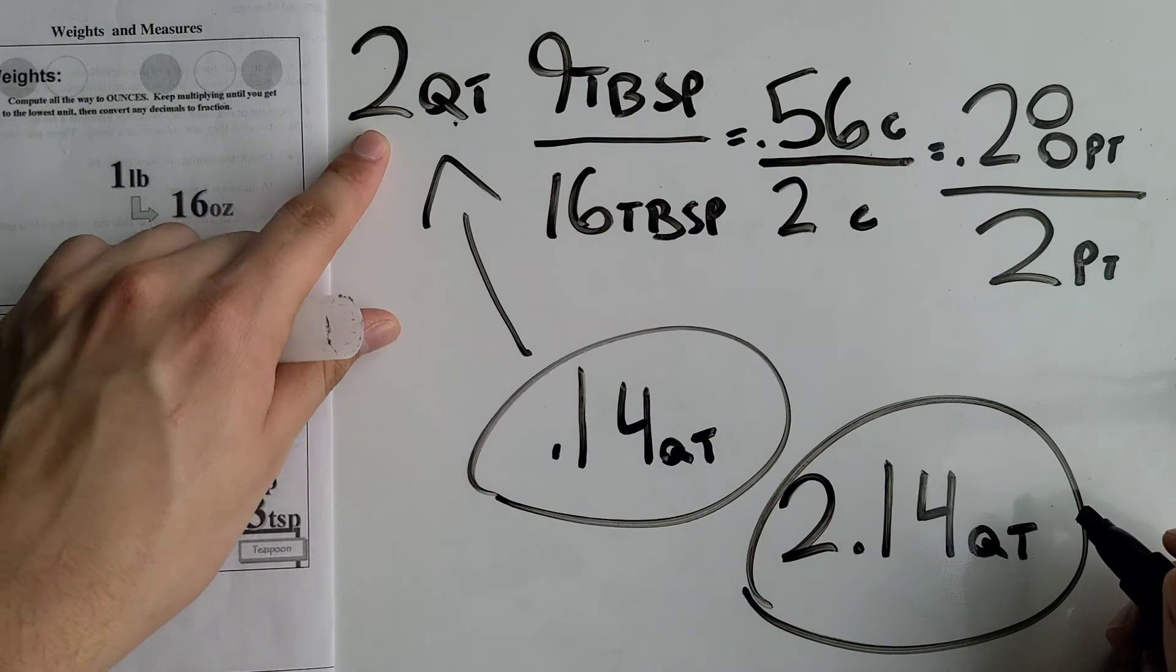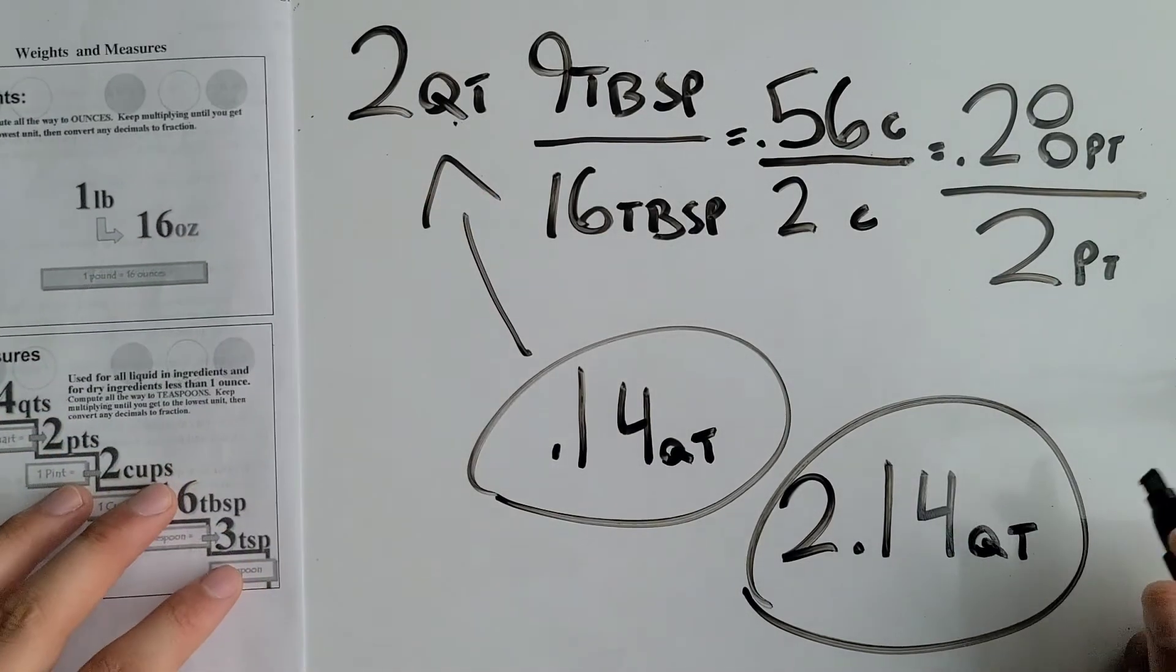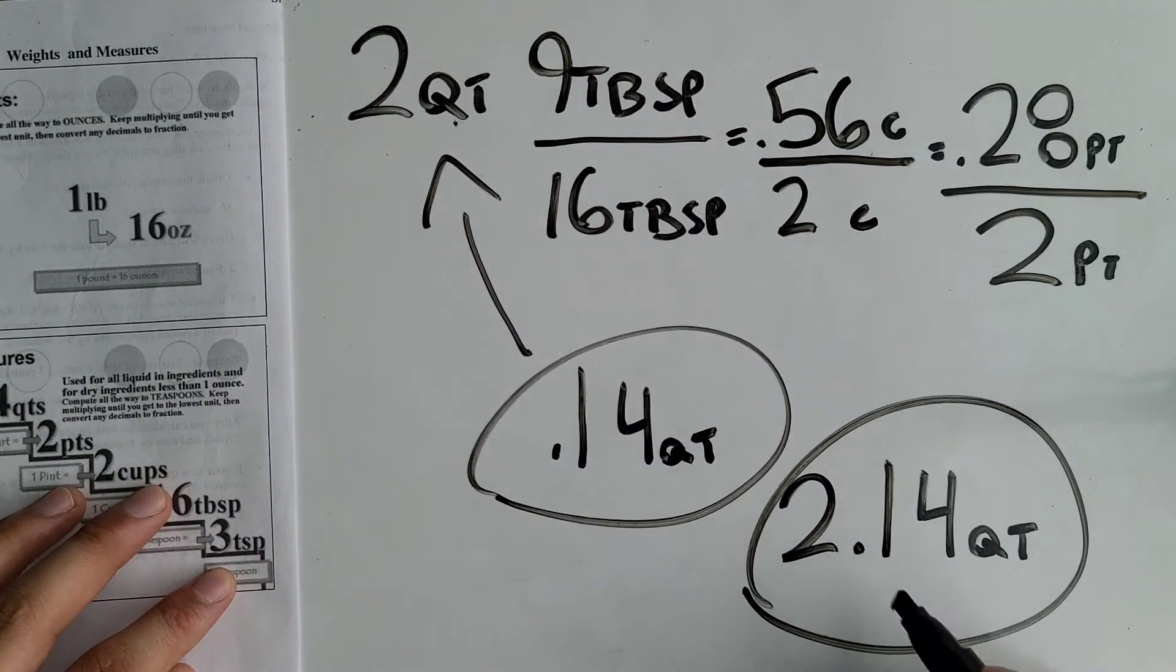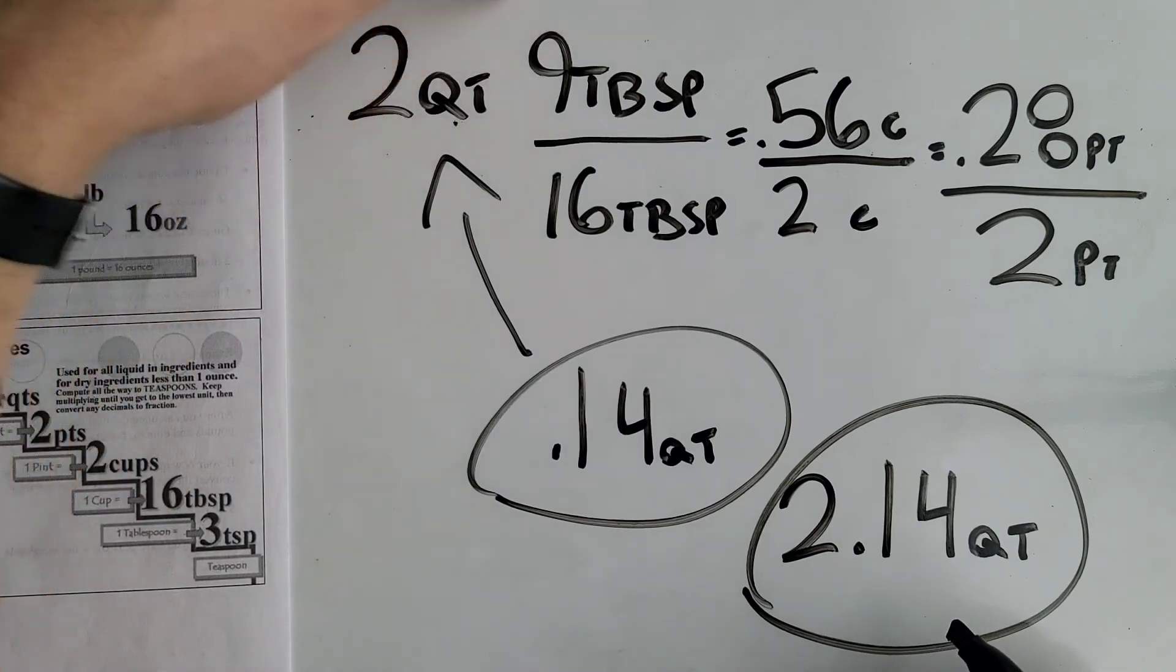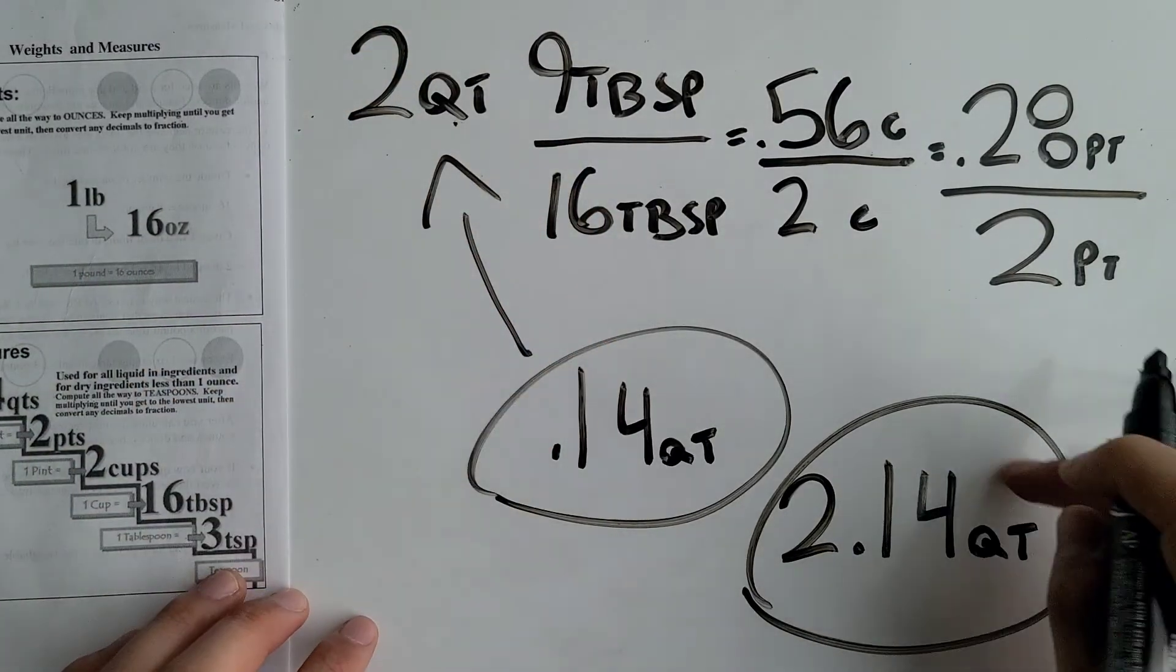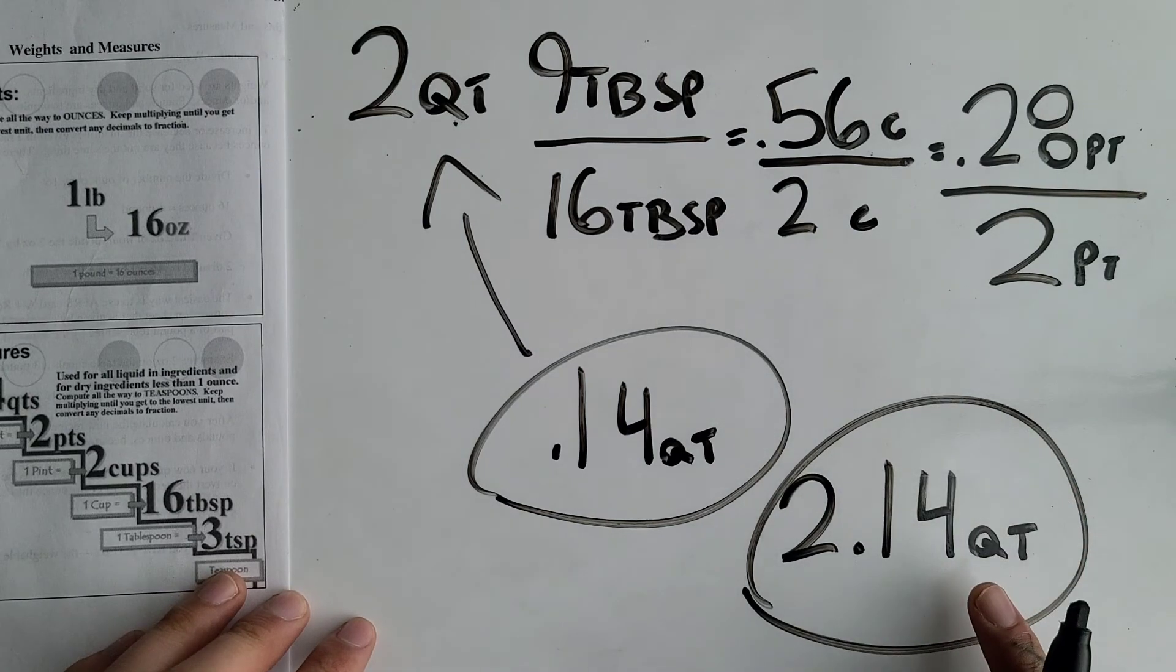Two quarts and nine tablespoons is the same thing as 2.14 quarts. This is a mixed unit and this is now after we converted it into a single unit.